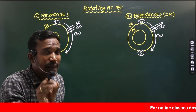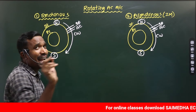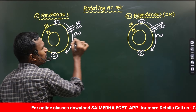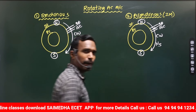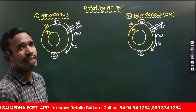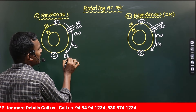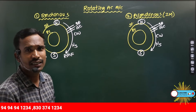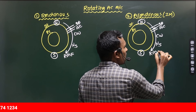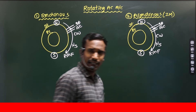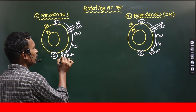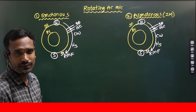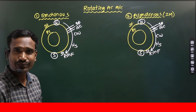That speed — specifically the speed of the stator magnetic field — is simply termed as Synchronous speed. This is called the stator rotating magnetic field. Both machines have the same stator rotating magnetic field up to this point. Then after, there are differences.